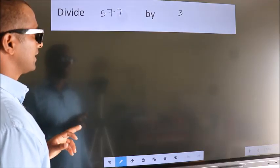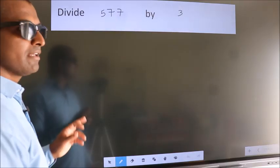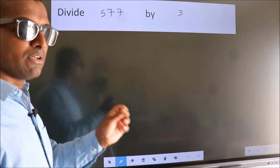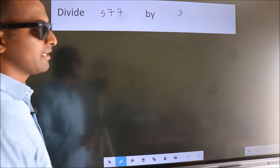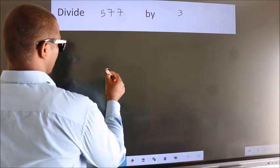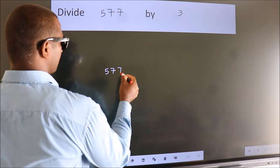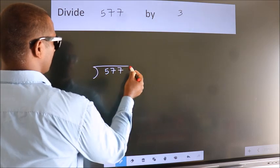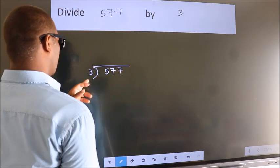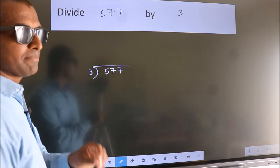Divide 577 by 3. To do this division, we should frame it in this way. 577 here, 3 here. This is your step 1.